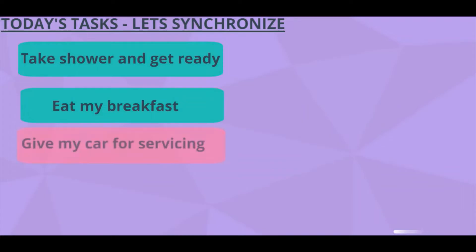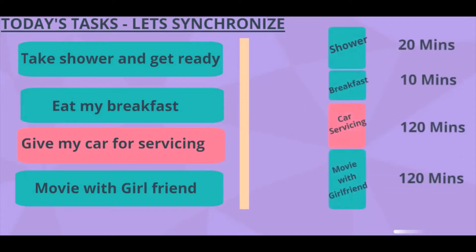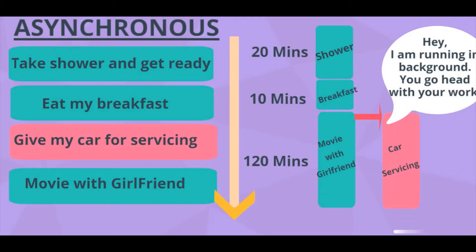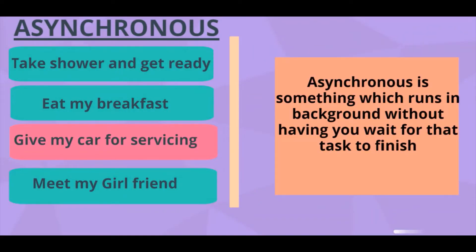Let's say after I took my shower and had breakfast, I found out my car is having trouble. So I need to take my car for servicing — it might take 2 hours — and then go for a movie with my girlfriend, which takes another 2 hours. The total time frame would be: shower 20 minutes, breakfast 10 minutes, car servicing 2 hours, and movie with girlfriend another 2 hours. Then I got an idea to follow an asynchronous approach. Car servicing doesn't really need my physical presence, so after completing breakfast I'll take my car to the servicing center, take a cab and go to the movie. While returning from the movie, I'll pick my car back up.